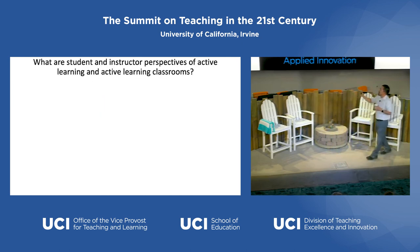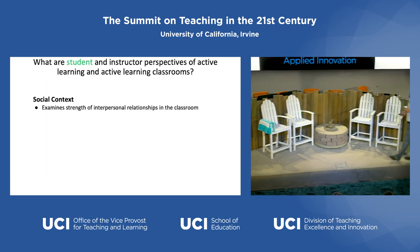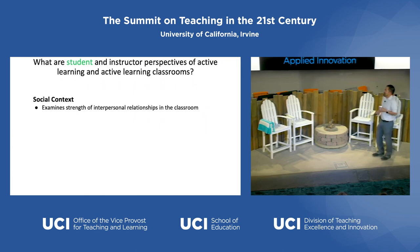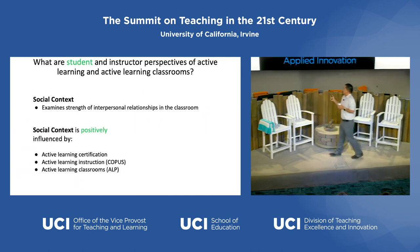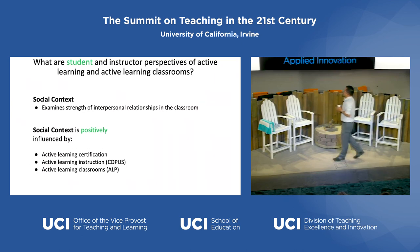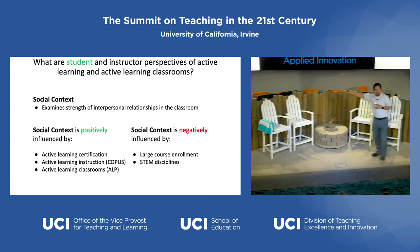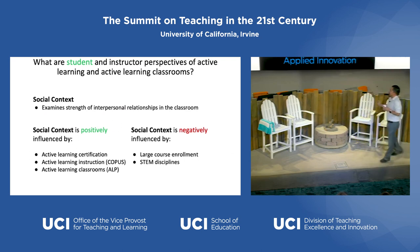From the student perspective, they surveyed students on social context — the strength of interpersonal relationships in the classroom, both peer-to-peer and peer-to-instructor interactions. Social context is positively correlated with: faculty who are active learning certified, classrooms that implement active learning, and classrooms in the Anteater Learning Pavilion. Negatively correlated: large course enrollment and STEM disciplines — the nationally known chilly environment in STEM classes, which they are actively working to improve.